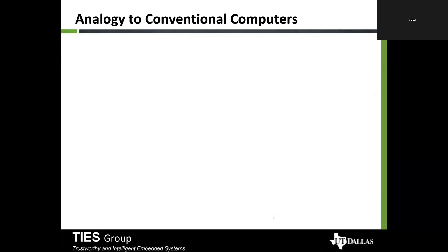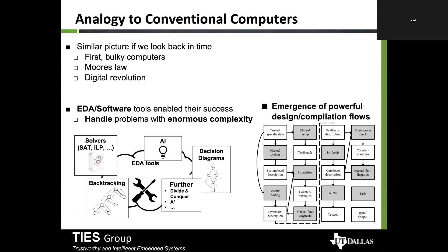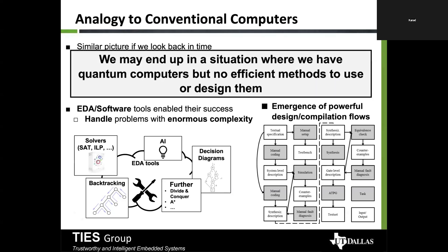In quantum computers, we are in a similar situation. We need much more powerful design and compilation tools. This diagram on the right shows exactly how our traditional EDA design flow works, and we need to develop the same flow for quantum computers. If we don't develop these tools, we may end up with quantum computers but no efficient methods to use or design them. Quantum EDA is a very important problem that more researchers should be invested in.